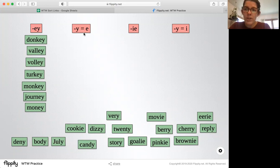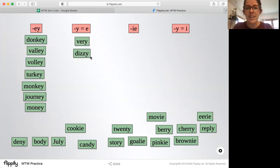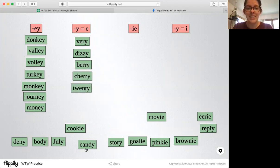Then there are words that end in y and it makes an e sound like very and dizzy. It ends in y and makes that e sound. Berry, cherry, twenty, candy, story. Okay, we'll come back to that if there's more.